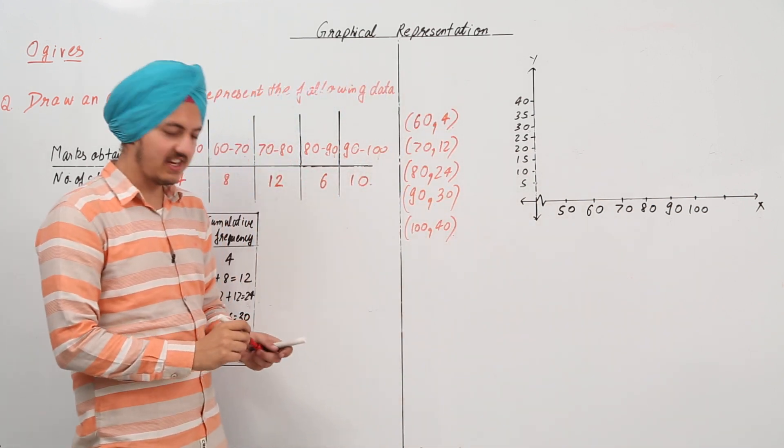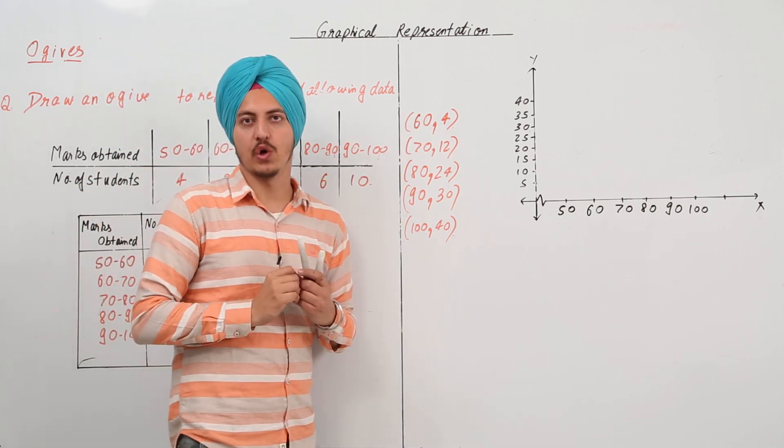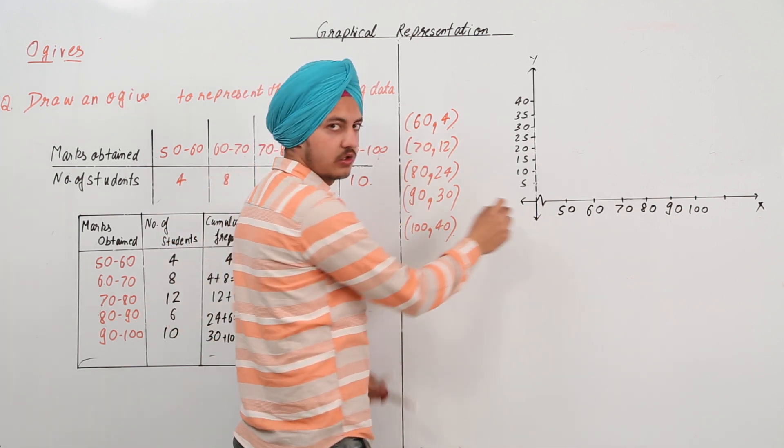For the next one we have 90 and the cumulative frequency is 30 and then 100, 40. We have to plot all these points on the graph and then join them.